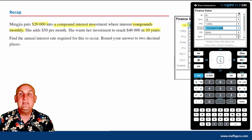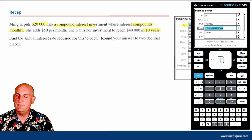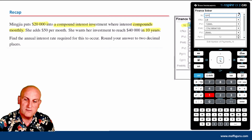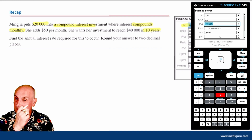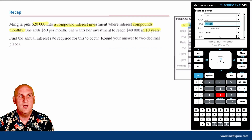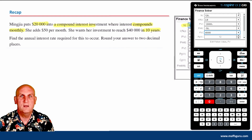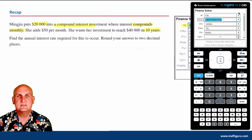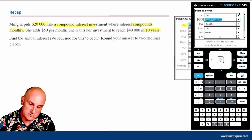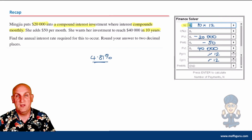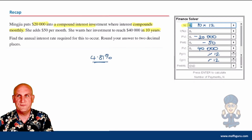I'm going to use the TI-Nspire — ClassPad users, it's pretty much the same functionality. Entering the values: N = 10 × 12 = 120, interest rate to find, PV = −20,000, PMT = −50, FV = 40,000, PPY = 12, CPY = 12. Hit enter and the interest rate comes out. Rounding to two decimal places: 4.81%. The only thing that changed from the previous video is what we're solving for — as long as you have six pieces of information, you can always find the seventh.